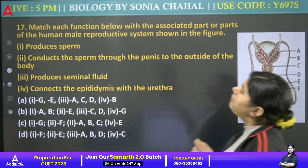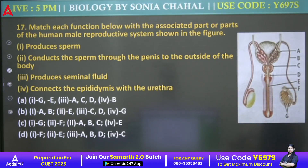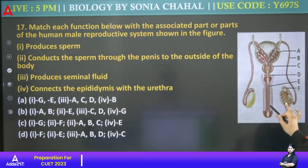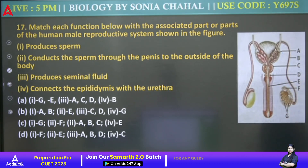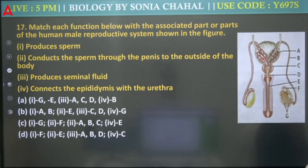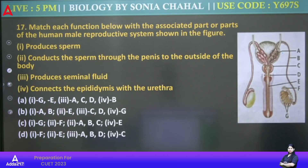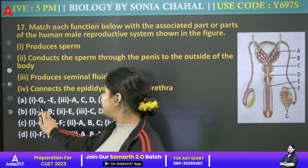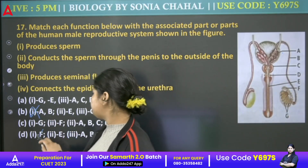Next: Match each function below with the associated part. Parts are given here and we have to tell their functions. First — produce sperm: that is G. Sperm is produced by G. Second — conduct the sperm through the penis to outside the body: that is E.